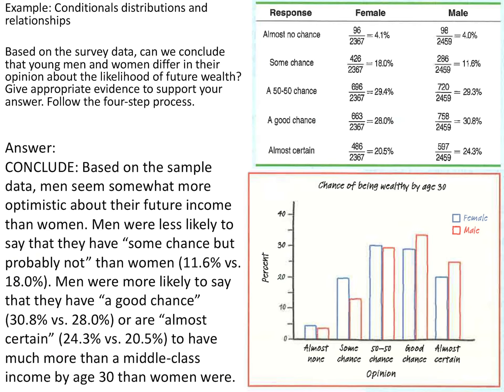Men were more likely to say that they have a good chance at 30.8% versus 28.8% for females, or almost certain where males were at 24.3% versus females at 20.5%, to have much more than a middle-class income by age 30. This conclusion is just pulling all the information back together, explaining what the work showed, and bringing it back to the original problem.